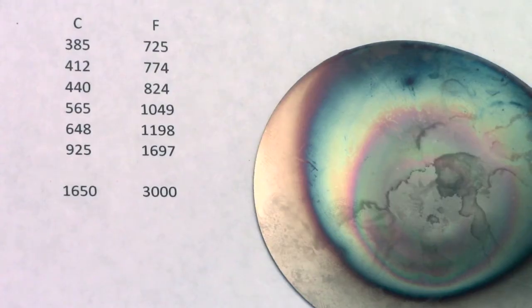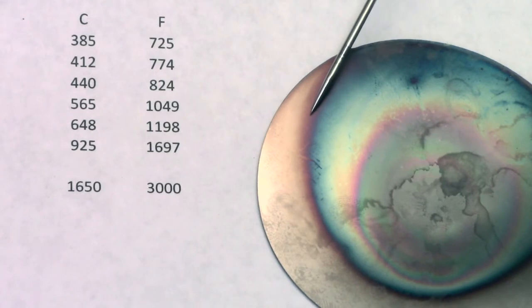Titanium starts anodizing about 700 degrees. So this pale gold straw here, that's all got up to 725F.